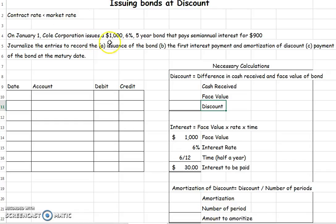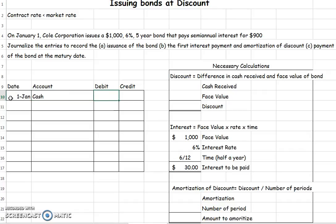On January 1, Coal Corporation issued a $1,000, 6%, five-year bond that pays semi-annual interest for $900. The fact that we're only going to be getting $900 for our $1,000 bond tells us it's at a discount. So on January 1, we received cash — $900, because it says we issued it for $900.